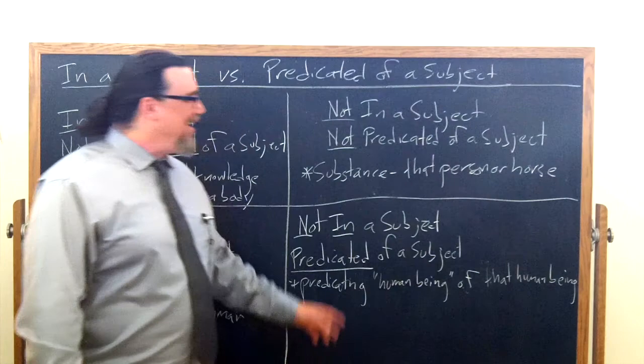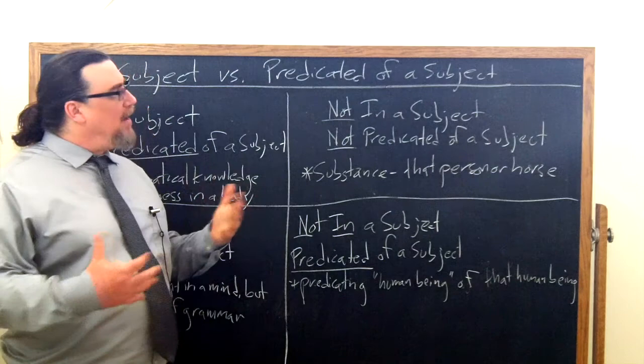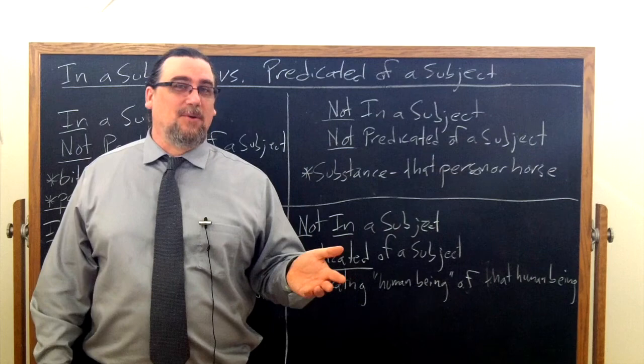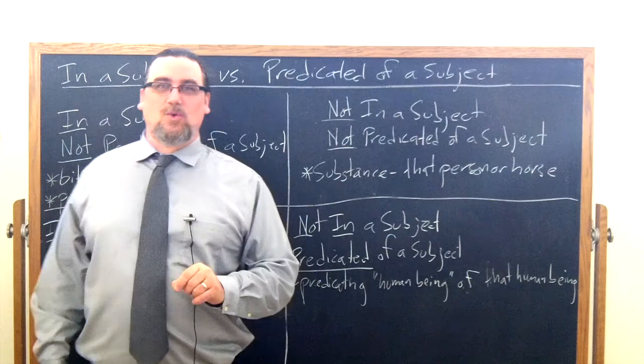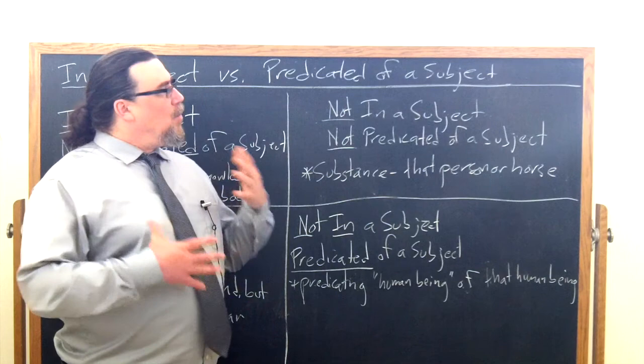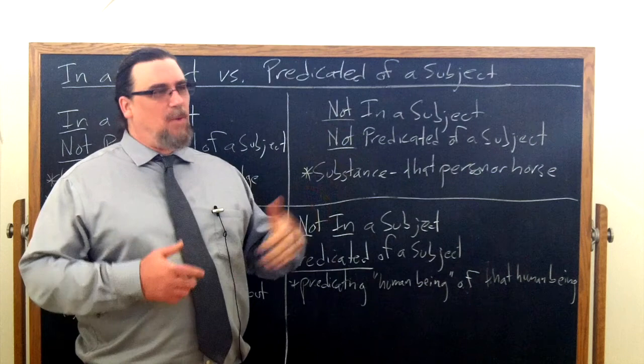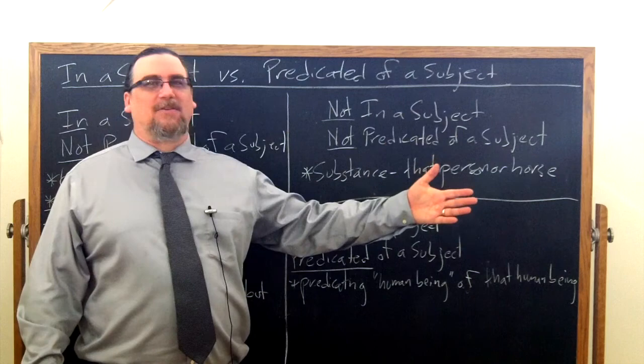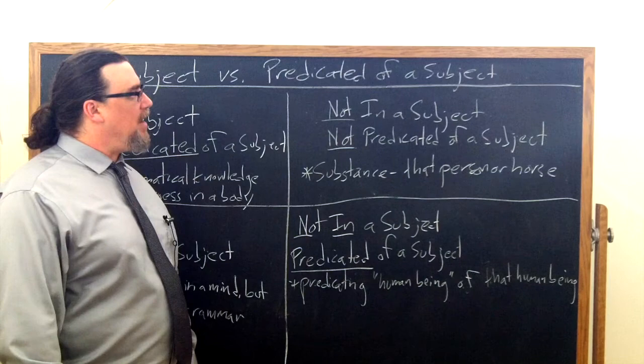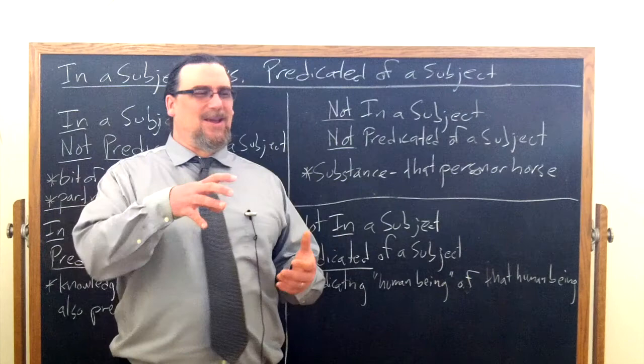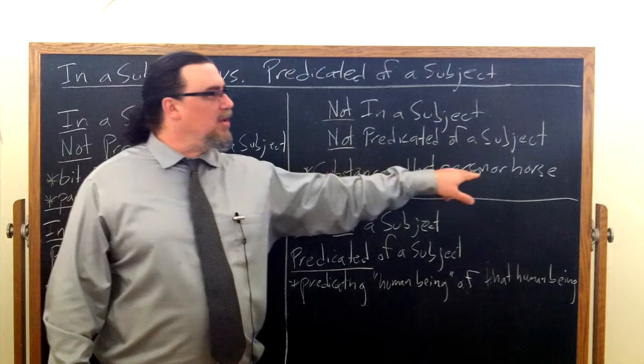Now, you might say, well, wait a second. What if Dr. Sadler gets into a bus or a train? Isn't he then in another subject, namely that individual mode of transportation? He hops in his car and drives around, right? Well, yes, in a sense. But that's a very accidental connection. And Aristotle would be willing to grant it. He'd just say, well, really what you're predicating is you're saying that Dr. Sadler is inside of something. There's a location or relation or something along those lines, right? And it's not really anything essential to say, well, Dr. Sadler's in this car. But so I'm not in a subject. That particular person or horse is not in a subject. It is a subject. It's not predicated of a subject.